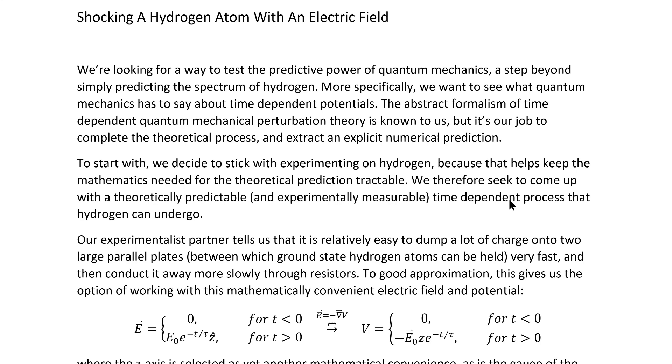Our hypothetical experimentalist partner tells us that it's relatively easy to dump a lot of charge onto two parallel plates very fast, of course two parallel plates between which we can hold hydrogen atoms, and then conduct that charge way more slowly through resistors.